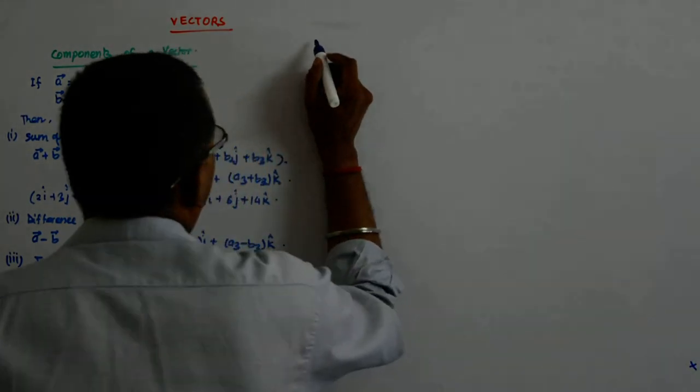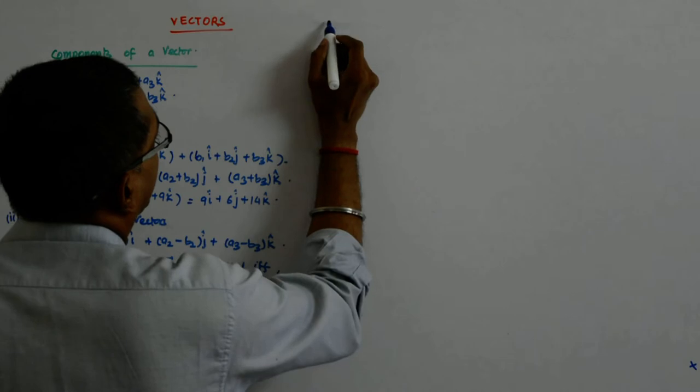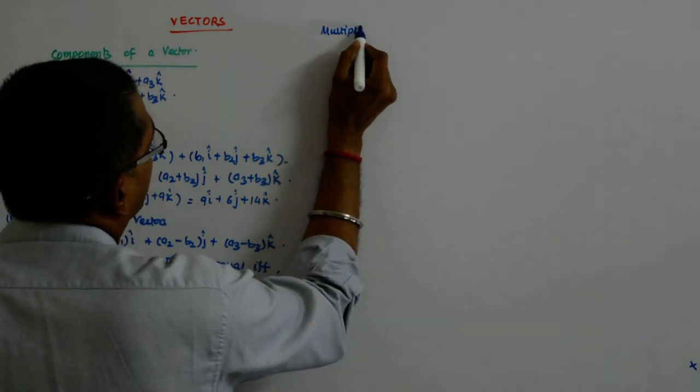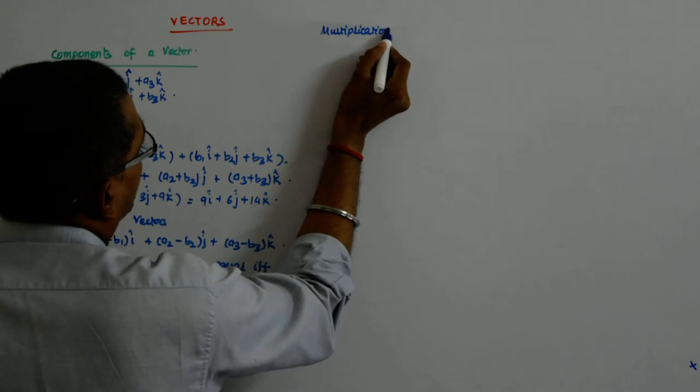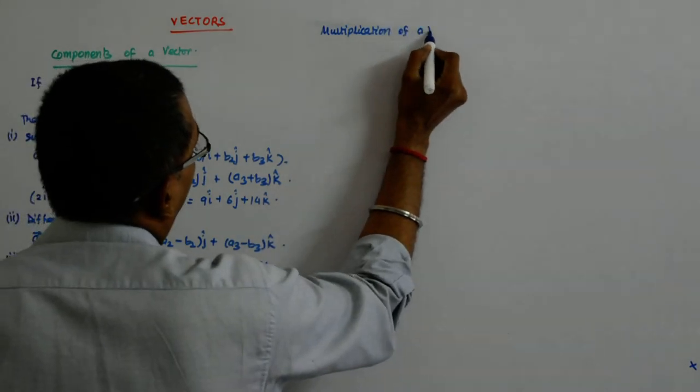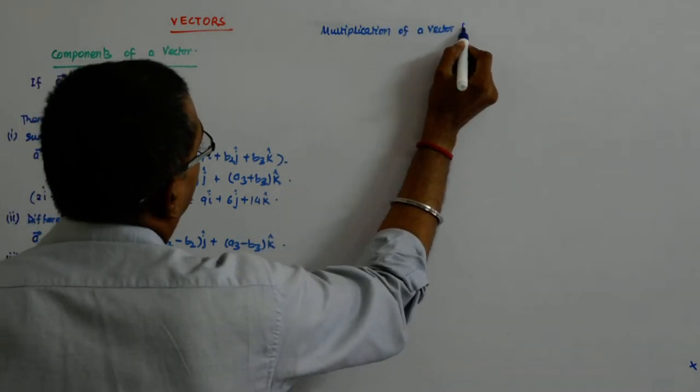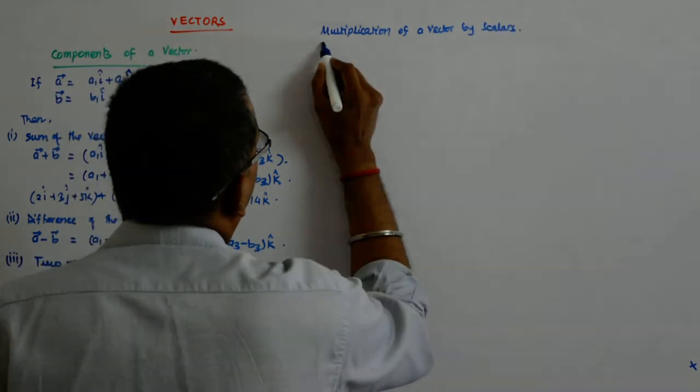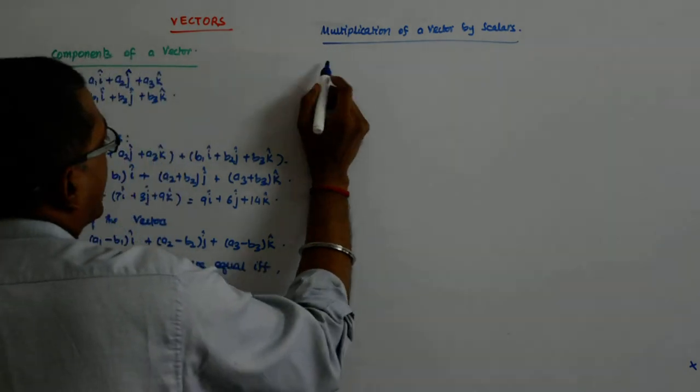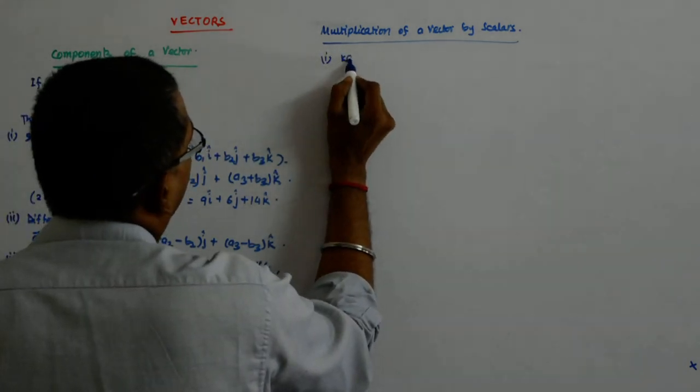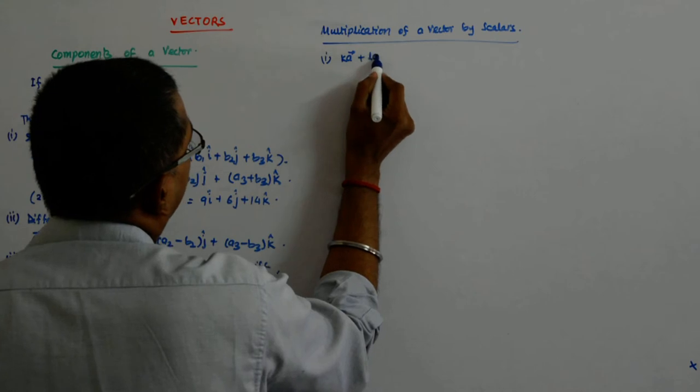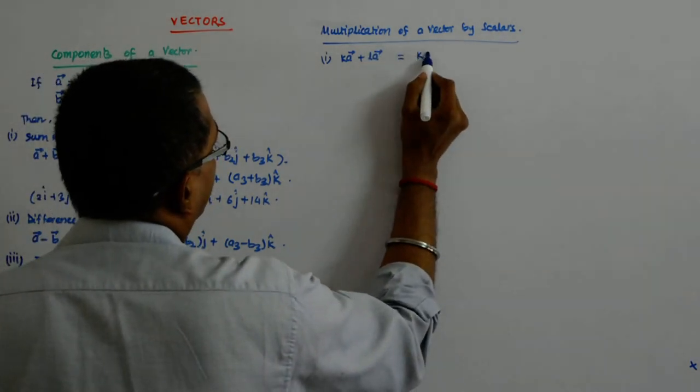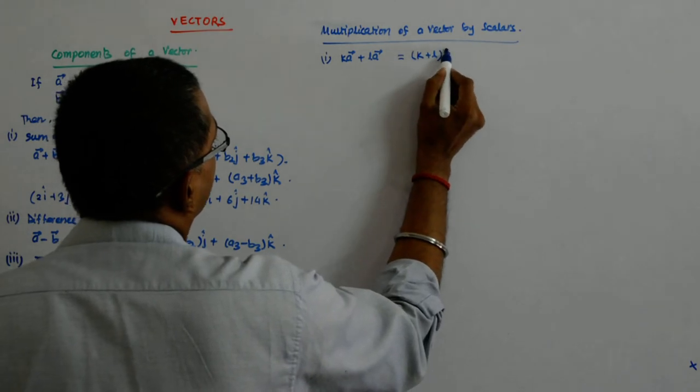Now, what happens if I multiply a vector? Multiplication of a vector by scalars, this we know already, but let us try to understand. If I have K A plus L A, then it will be equal to K plus L into A.